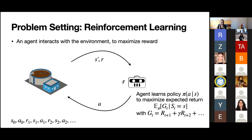The agent is in some state S described by all the sensory information, takes some action like changing pump speeds, and gets back a reward and a next state. It sees this long stream of interaction, and its goal is to learn a policy that maximizes its expected return — the most cumulative reward into the future, discounted by some gamma less than one. Actions right now impact reward into the future, so the agent needs to take that into account.